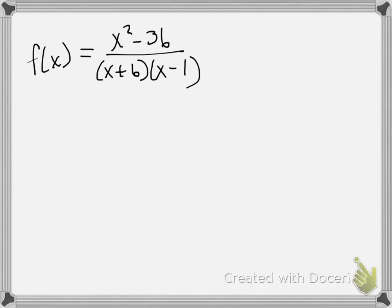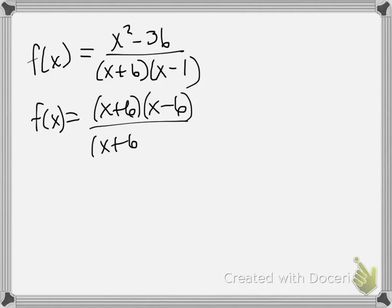So again, I'm going to factor my numerator. So I have f(x) equals x squared minus 36, all divided by x plus 6 times x minus 1. I'm going to factor my numerator into x plus 6, x minus 6, and I'm going to copy my denominator, x plus 6, and the factor x minus 1.